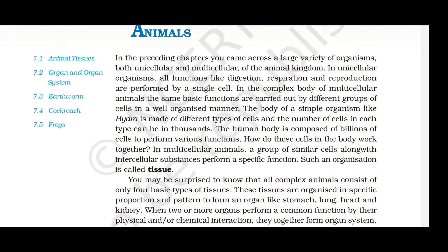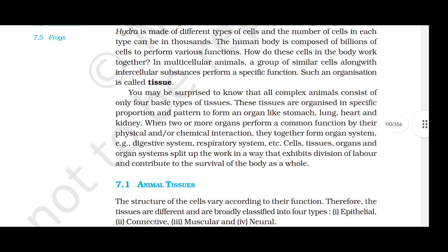The body of a simple organism like hydra is made of different types of cells, and the number of cells in each type can be in thousands. The human body is composed of billions of cells. In multicellular animals, a group of similar cells along with intercellular substances perform a specific function — such an organization is called a tissue. Cells, tissues, organs and organ systems exhibit division of labor and contribute to the survival of the body as a whole.